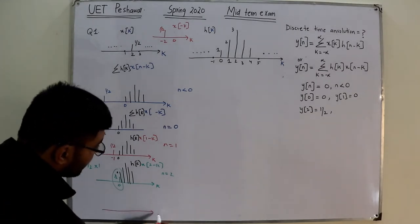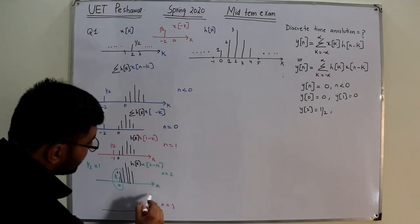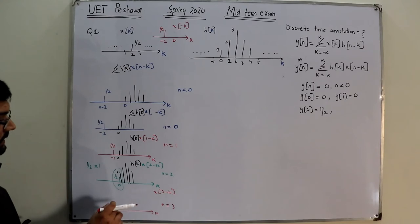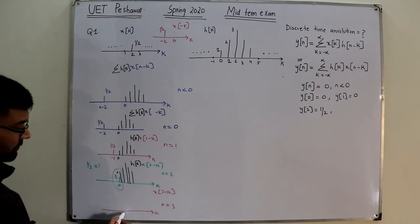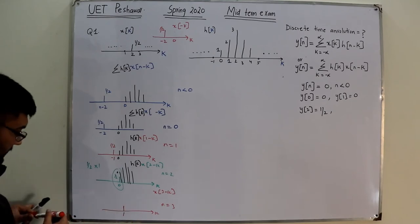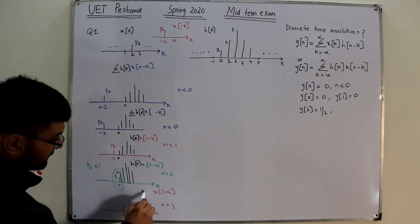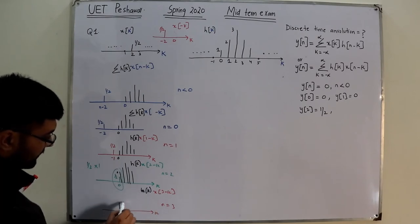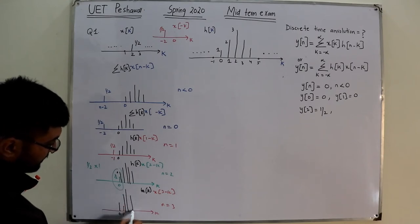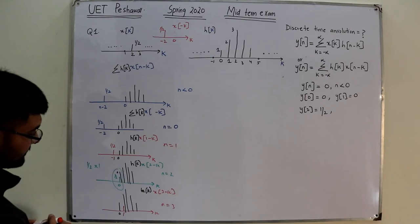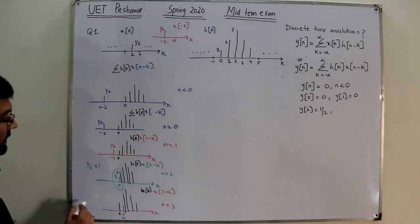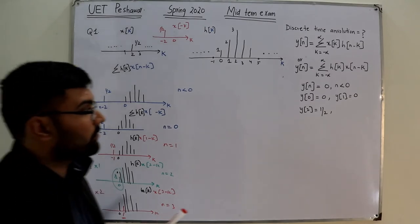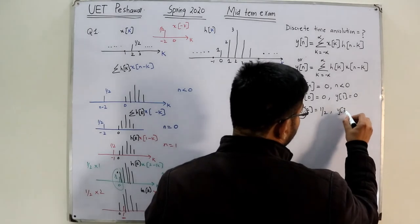For n equal to three: X of 3 minus K is located at positive one, with value one-half. H of K exists at zero and at one, so we have a single overlap at one. At one, H of K is two, so one-half multiplied by two gives y of three equals one.